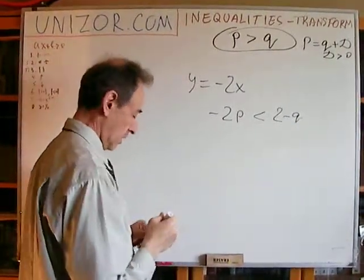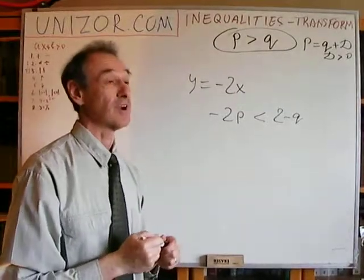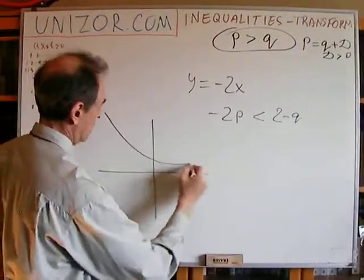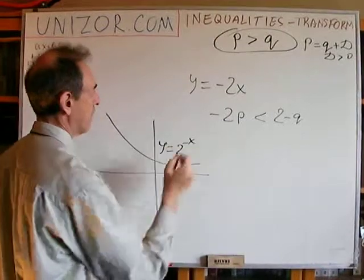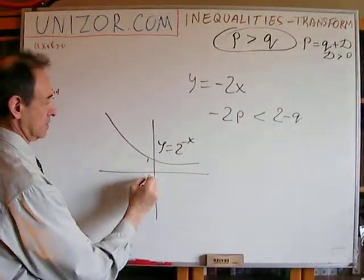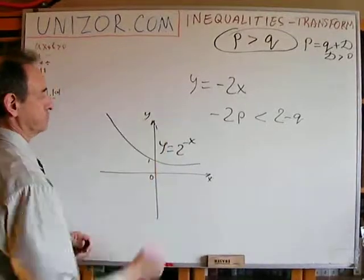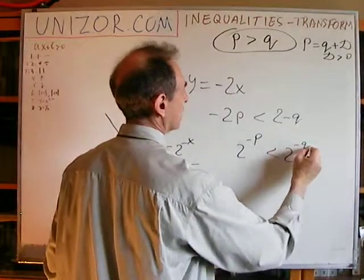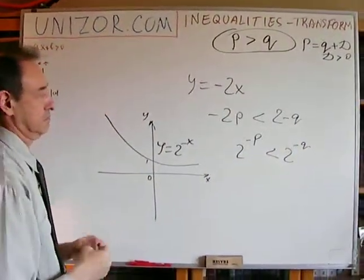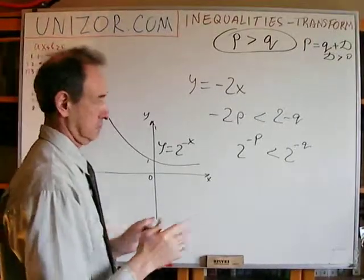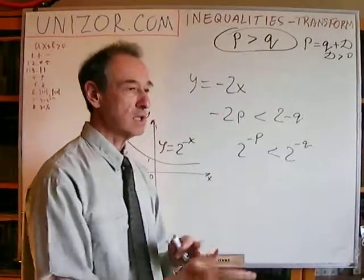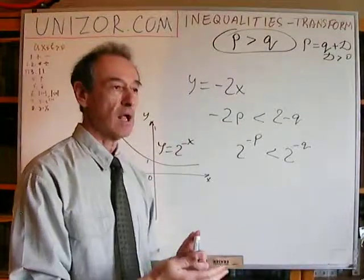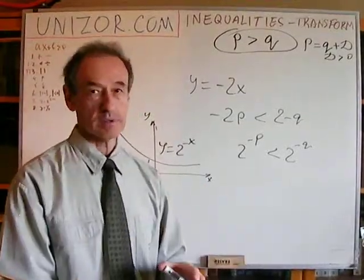Another example of a monotonically decreasing function: consider y equals 2 to the power of minus x. So if p greater than q, then 2 to the power of minus p would be less than 2 to the power of minus q. Monotonically increasing and decreasing functions can be applied to an inequality with the result being correspondingly the same or the opposite inequality.